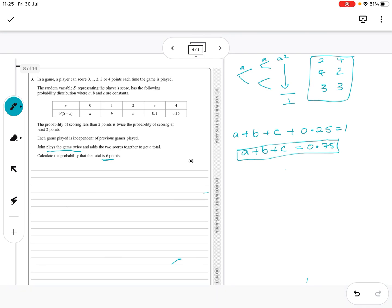And then you've got to do this one. So the probability of scoring less than 2, which is these two, is twice the probability of scoring at least 2. So at least 2 means 2, 3, 4. So A plus B must equal 2 lots of C plus 0.25.